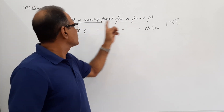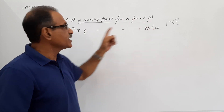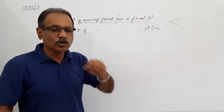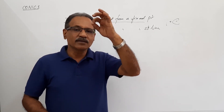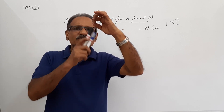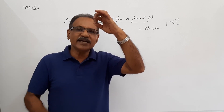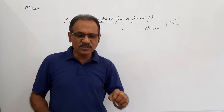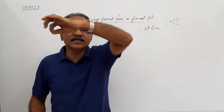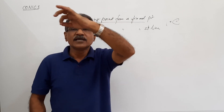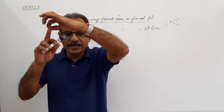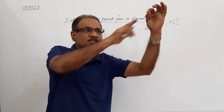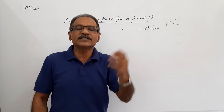So, a point is moving. Freeze it for an instant. Distance of this point from some fixed point divided by distance of this point from some fixed straight line remains a constant. The fixed straight line and the fixed point are always fixed. The point is moving. When it moves to another place, this distance by this distance is the same — it remains a constant. That is called a conic.